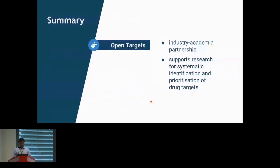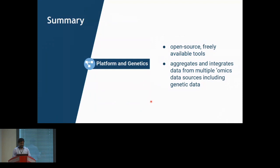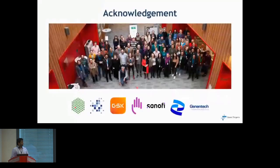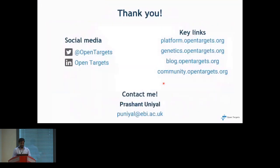To summarize: OpenTargets is an industry-academia partnership that supports identification of drug targets and their prioritization. It's open source, completely freely available, integrates multiple omics data, and you can search for target-disease evidence, underlying associations, and various drugs. Thanks to the team and all our partners for their effort.